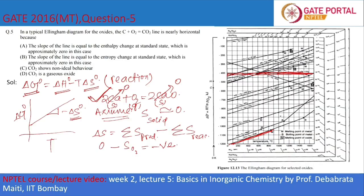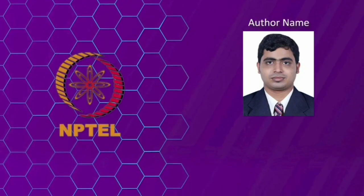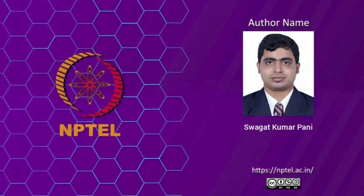So the correct option is B: the slope of the line equals the standard entropy change, which is approximately zero in this case.